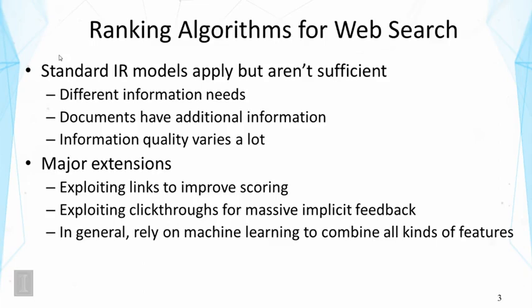First, on the web, we tend to have very different information needs. For example, people might search for a web page or entry page, which is different from traditional library search where people are primarily interested in collecting literature information. These kinds of queries are often called navigational queries — the purpose is to navigate to a particular target page. For such queries, we might benefit from using link information.